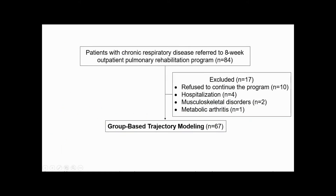This is a retrospective study based on the analysis of patient data. In total, there were 84 patients with chronic respiratory disease referred to an 8-week outpatient pulmonary rehabilitation program. All patients received once-weekly supervised training for 8 weeks. Muscle strength and 6-minute walk distance were assessed at baseline, week 4, week 8, and monthly for 2 months after pulmonary rehabilitation completion. There were 67 patients who completed the pulmonary rehabilitation program.